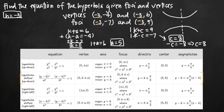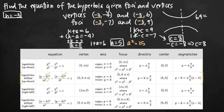Now we have k equals 1, h equals negative 3, a equals 5 so a squared equals 25, and c equals 8. We just need b squared. The chart gives us the relationship c squared equals a squared plus b squared. So 64 equals 25 plus b squared, which means b squared equals 39. Now we have everything we need.